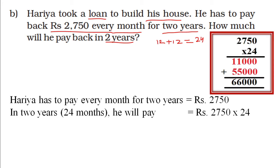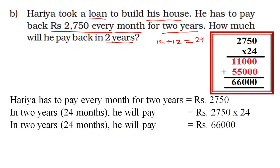So 2750 into 24. In first step we will multiply with 4, in second step we multiply with 20, then we will add. So in 2 years, that is in 24 months, he will pay Rs. 66000.